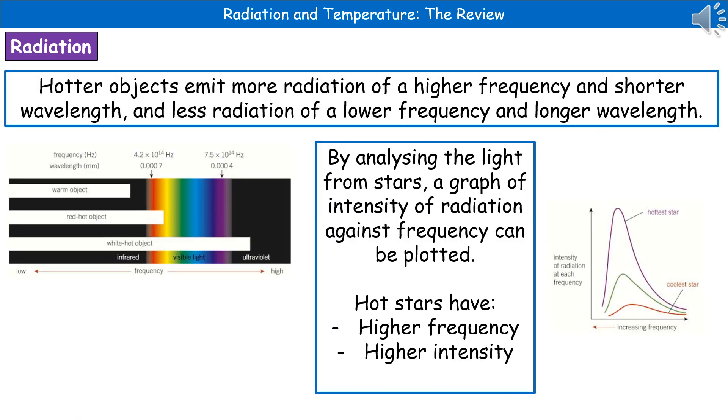If we've got a hotter object, it's actually going to be emitting more radiation of a higher frequency and shorter wavelength and less radiation of a lower frequency and longer wavelength. If you have a look at the diagram on the left there, we've got our visible light spectrum, ultraviolet to the right of that, infrared to the left, just as you'd expect from the EM spectrum.